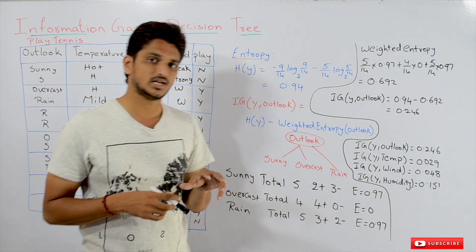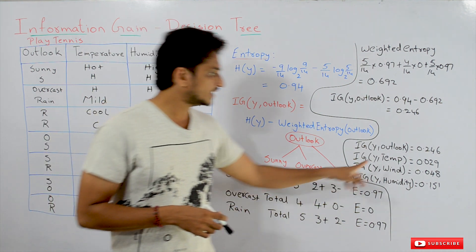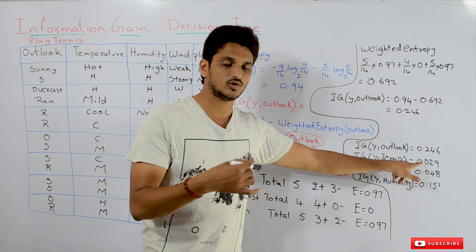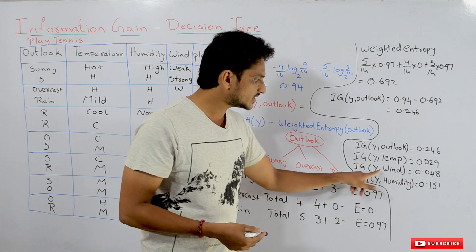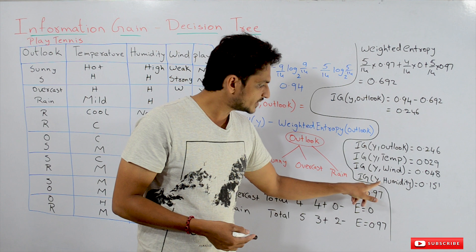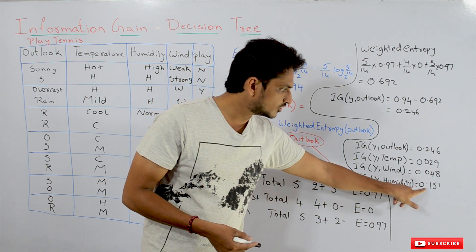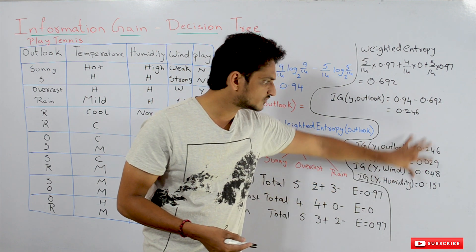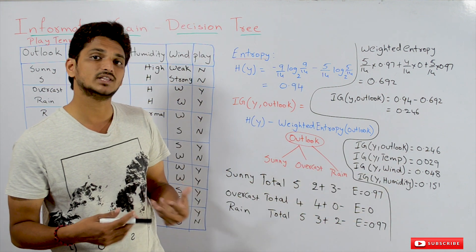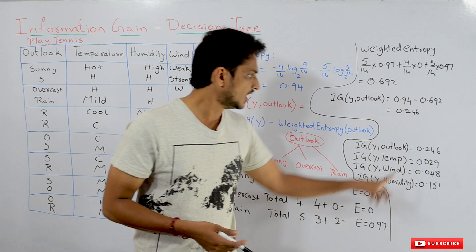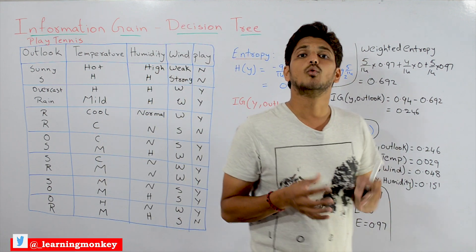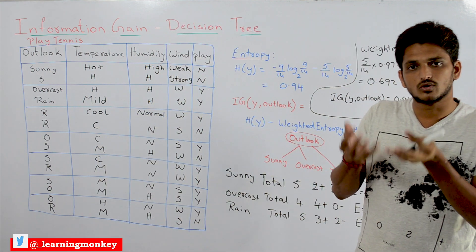Similarly, information gain for temperature is 0.029, information gain for wind is 0.048, and information gain for humidity is 0.151. Out of these 4 columns, outlook is having the highest information gain value, so we pick outlook as the root node.